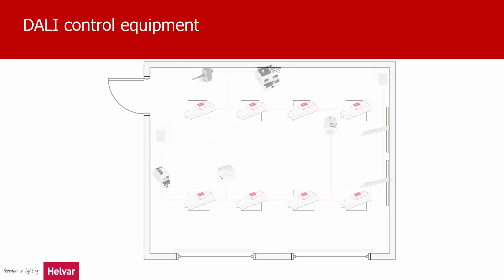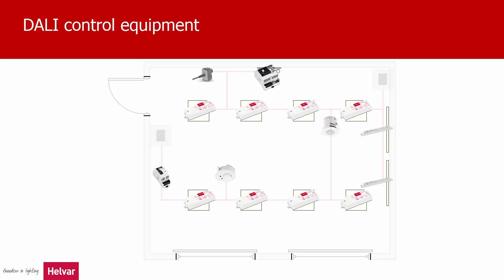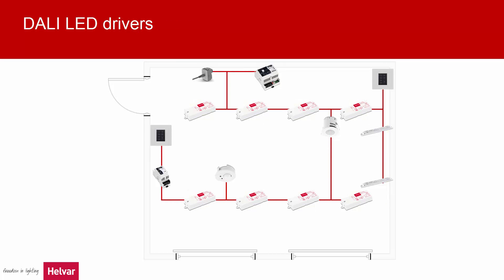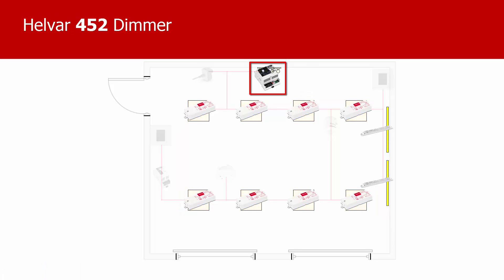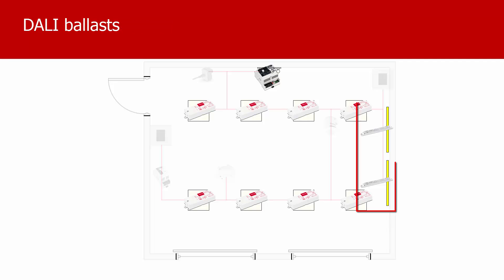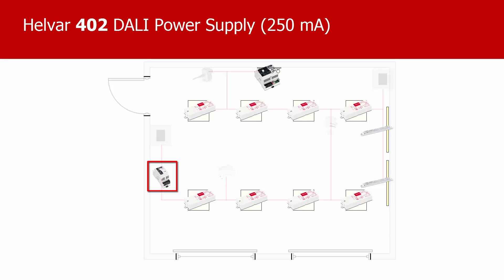This DALI equipment has been installed to control the lighting. In the main group of lighting, each LED luminaire has an LED driver. The lamps above the artwork are connected to a Helvar DALI-compatible dimmer. Each of the fluorescent tubes has a DALI electronic ballast housed in the luminaire. This small unit is the DALI system power supply, usually installed in a ceiling cavity or in a cabinet or other enclosure.